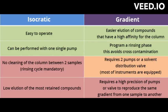What is the difference between isocratic and gradient HPLC? High-performance liquid chromatography, HPLC, is a technique used to separate and analyze complex mixtures of compounds. There are two main types of HPLC: isocratic and gradient.